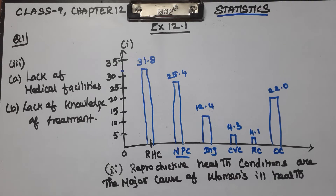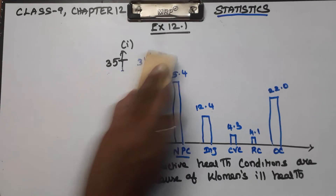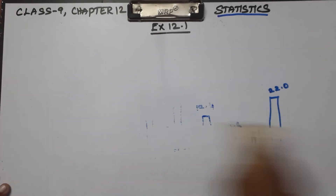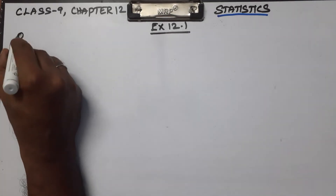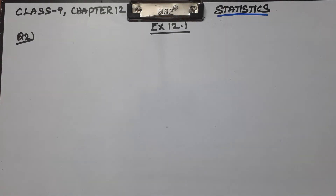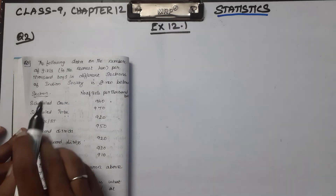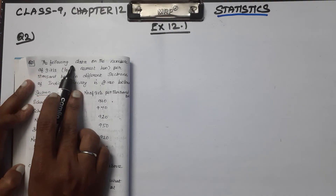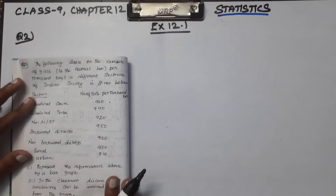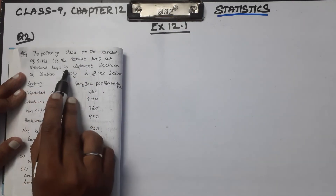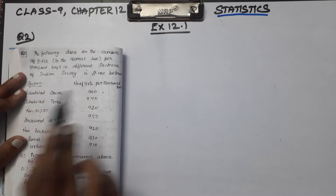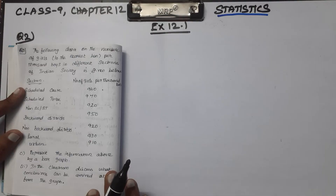So next, question number 2. The following data on the number of girls to the nearest ten per 1000 boys in different sections of Indian society is given below.